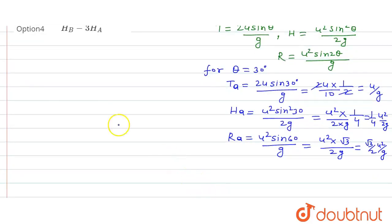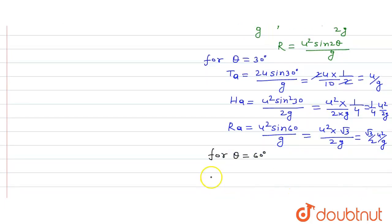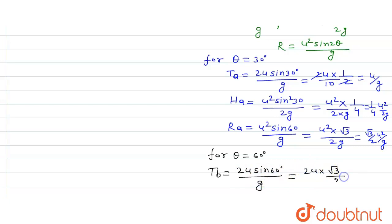Now similarly we calculate for projectile B, where theta equals 60 degrees. The time of flight tB is equal to 2u sine 60 upon g, which is 2u times root 3 over 2 divided by g. The 2s cancel, giving tB equal to root 3 times u over g.